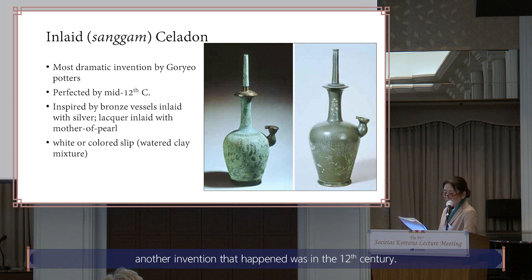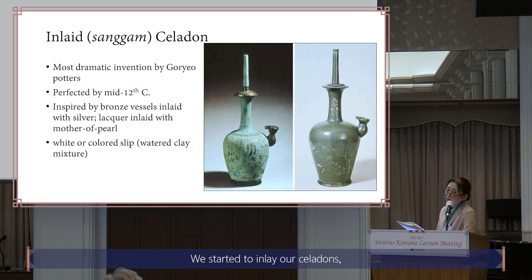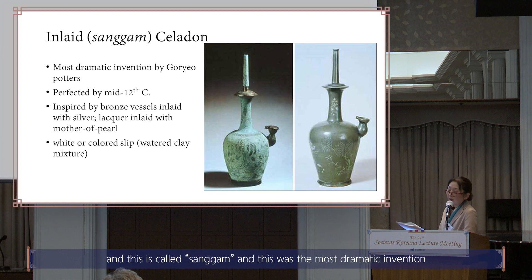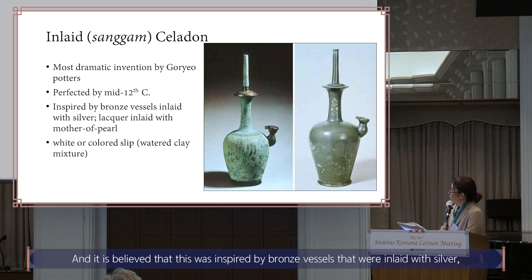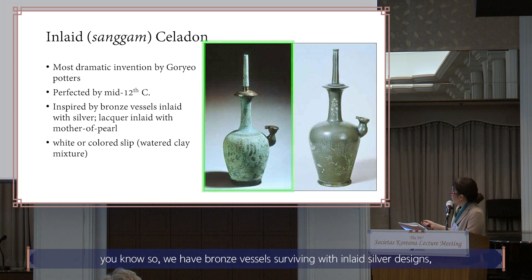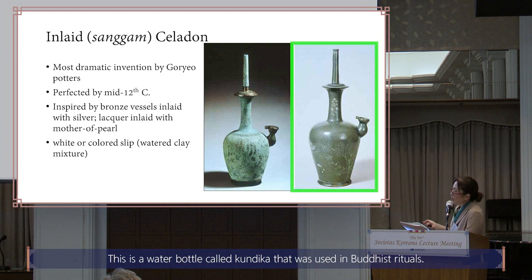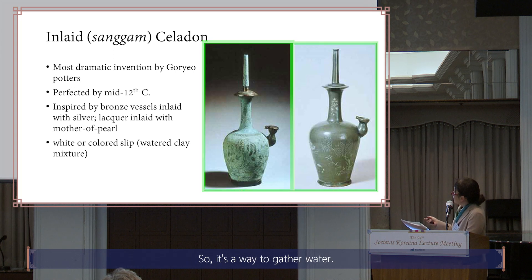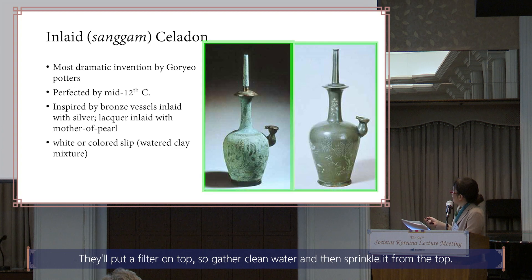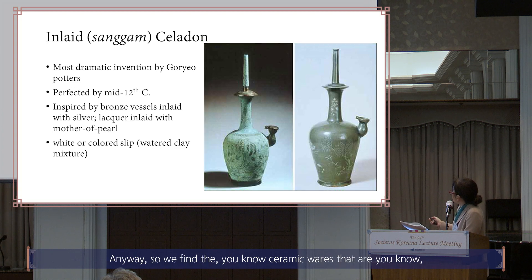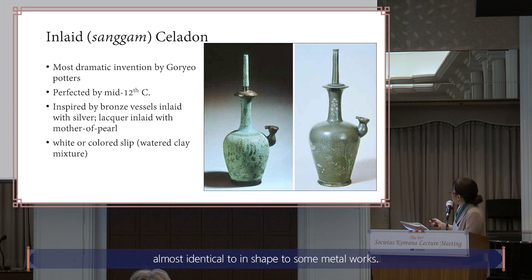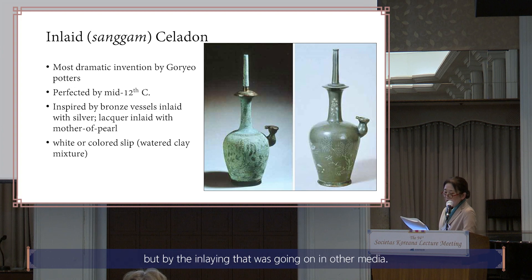Another invention that happened was in the 12th century: we started to inlay our celadons. This is something the Chinese did not do, and it is called Sangam — the most dramatic invention by Koryo potters. It is believed this was inspired by bronze vessels that were inlaid with silver. You find ceramic wares almost identical in shape to some metal works, and it is believed that this inlay was inspired by the inlay going on in other media.